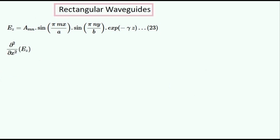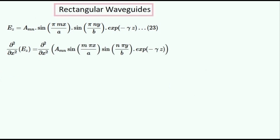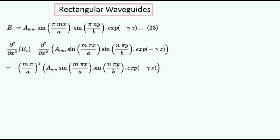We are now going to find the second derivative of this electric field with respect to x. Substituting this value in gives us this expression, and evaluating it gives us this. So this quantity is equal to this number multiplied by the electric field in the z direction.